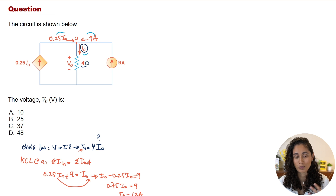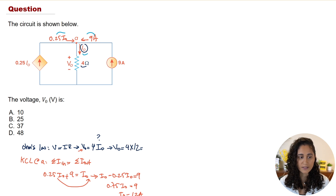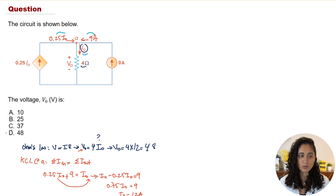To solve for V_naught, we go back to our Ohm's law equation: V_naught = 4 × 12 = 48 volts. Looking at the multiple choice options, the answer is D.